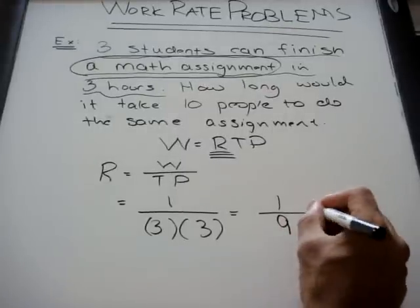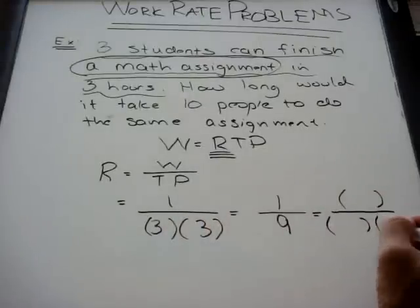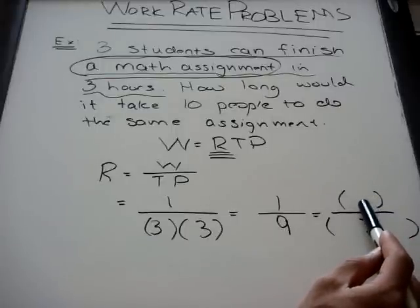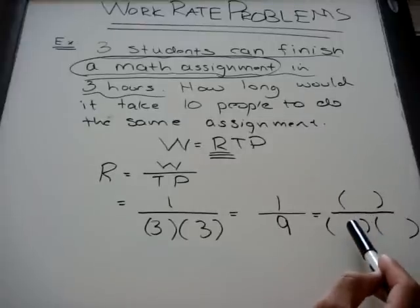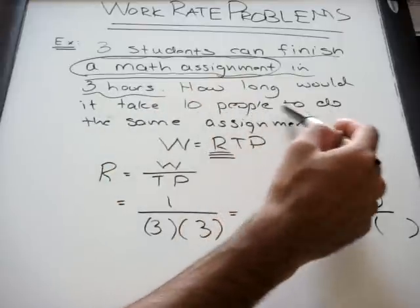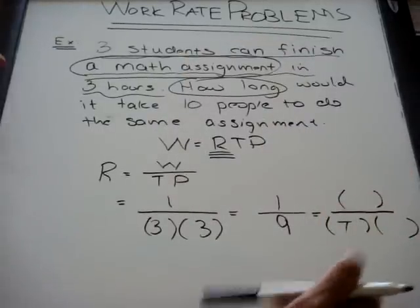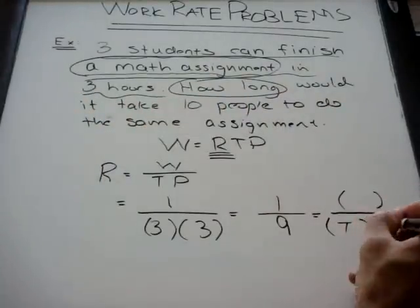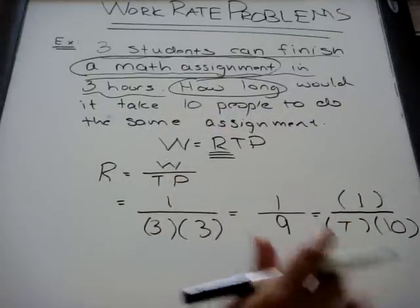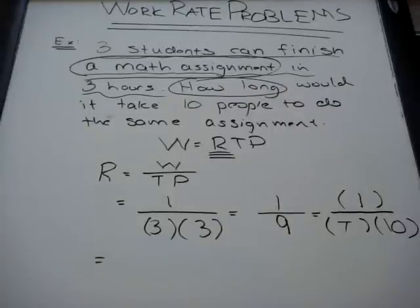Now since this rate is going to stay the same, we can just set up a proportion. But remember that since there were three parts—work, time, and people—I'm going to put a set of parentheses for each position. And then you need to determine, are we looking for the work, how much work was done, or how many assignments were completed? Are we asked to find how much time or how many people it would take to do it? Reading the question says how long would it take ten people to do the same assignment. So how long, hopefully you guys all know, means we're looking for the time, meaning that we should know these two. How long would it take ten people, so the people is ten. To do the same assignment, the same assignment, so it's just one. So our equation becomes one over nine is equal to one over ten T.